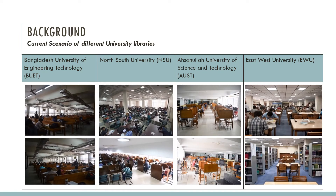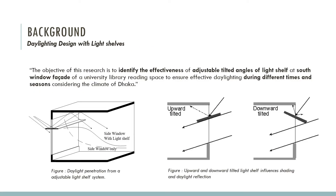By thanking Professor Dwardar, I would like to start explaining the background of the research. Dhaka, being the capital, is one of the largest megacities of the world. Most of the public and private university libraries here lack effective daylighting and glare-free uniform lighting in the reading spaces, as shown in the images. As daylight through windows varies significantly by time and season, a common phenomenon in library reading spaces is that students tend to draw the curtain when the weather is sunnier than usual and turn on artificial lighting, resulting in additional energy use. Light shelves can be an effective element to enhance the quality of daylight in tropical buildings if designed and located properly.